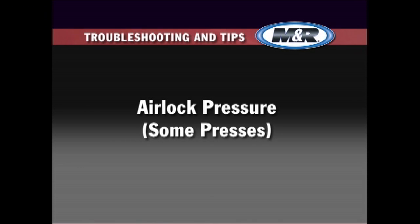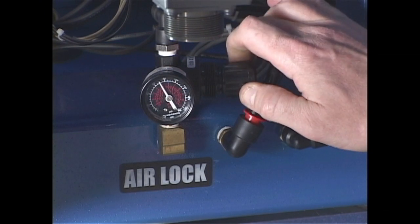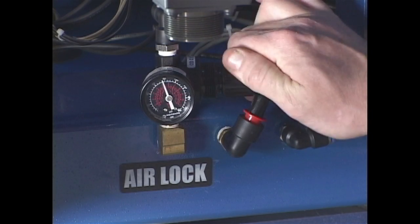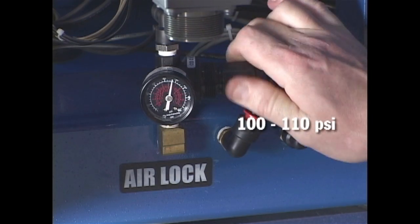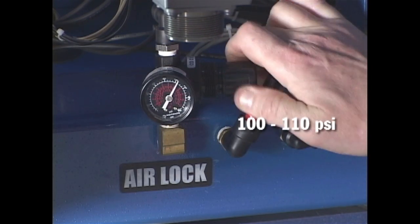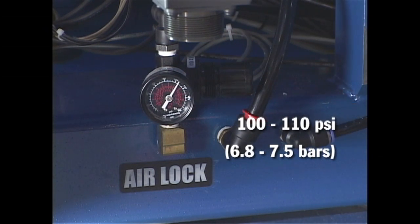Some M&R automatic presses are equipped with a frame airlock pressure regulator at the base of the machine. Remove the lower cover to access the regulator and set the regulator between 100 and 110 PSI, or 6.8 and 7.5 bars.